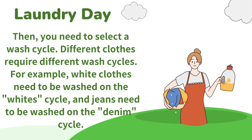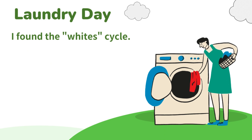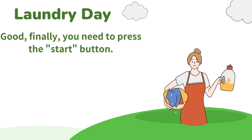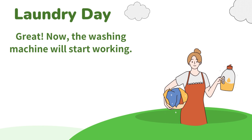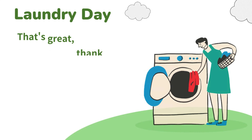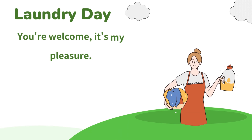Different clothes require different wash cycles. For example, white clothes need to be washed on the white cycle, and jeans need to be washed on the denim cycle. I found the whites cycle. Good, finally, you need to press the start button. Okay, I pressed it. Great. Now the washing machine will start working. That's great. Thank you, Catherine. You're welcome. It's my pleasure.